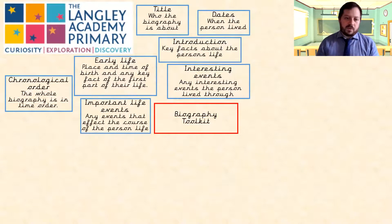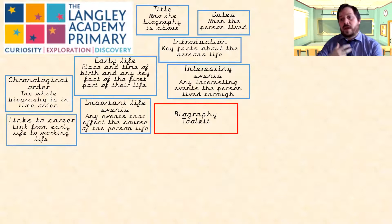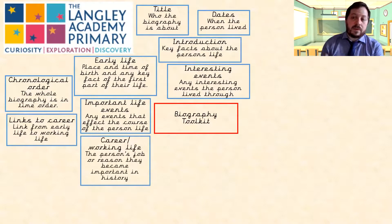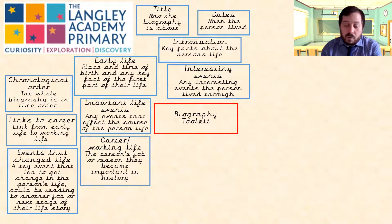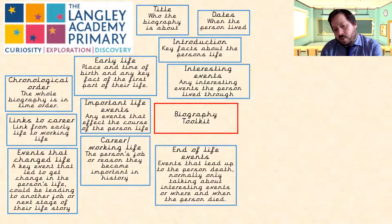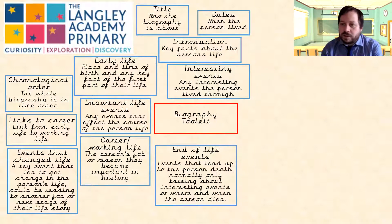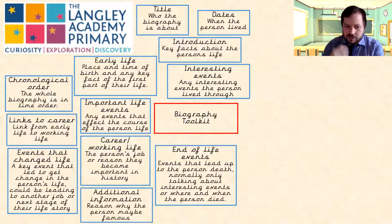You might have important life events that cause change during early life, leading into their career. At many points in people's lives there are events which change the course — changing their job, where they live, or leading to significant changes such as the end of their life. During a biography you talk about what led them to the end of their life, whether illness or a significant event, depending on the person. You then end with additional information, normally the reason why the person is famous.